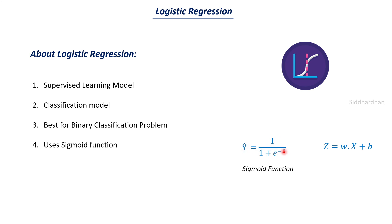The sigmoid is given by one over one plus e to the power minus z, where z equals wx plus b, and x is our input feature. For example, if predicting whether a person has diabetes, input features would be weight, BMI, blood sugar level, age, and so on. These are the input features; the output is whether the person has diabetes. w and b represent weights and bias. y-cap depends on z, which is wx plus b.